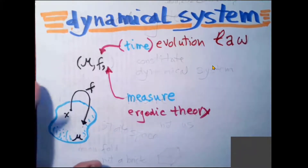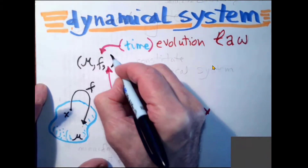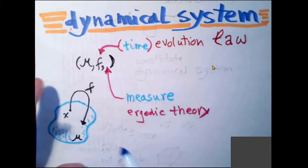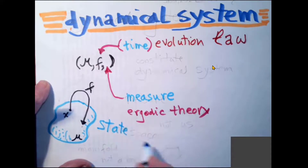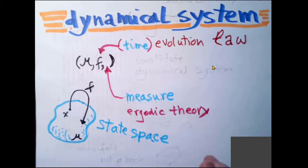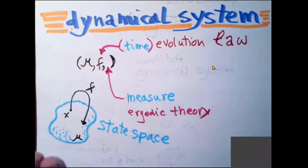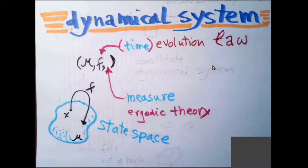So in this course we just define this space as state space — that's an engineering term used in robotics and rocket science, which I find better than what physicists often used to do. But if the system happens to be Hamiltonian — mechanical, energy-conserving, having positions and momenta defined — then one talks about phase space. That's just a very special situation; the theory we are developing here is much more general than that.